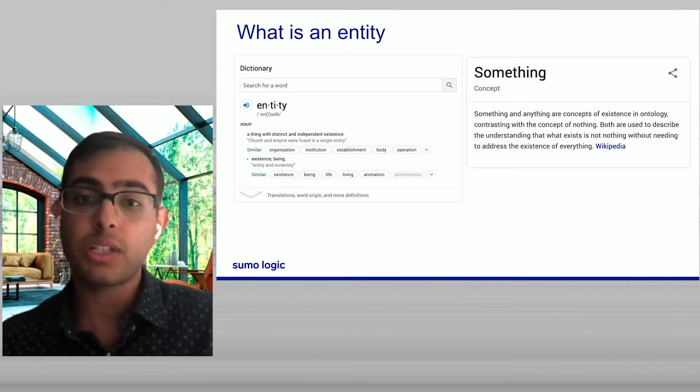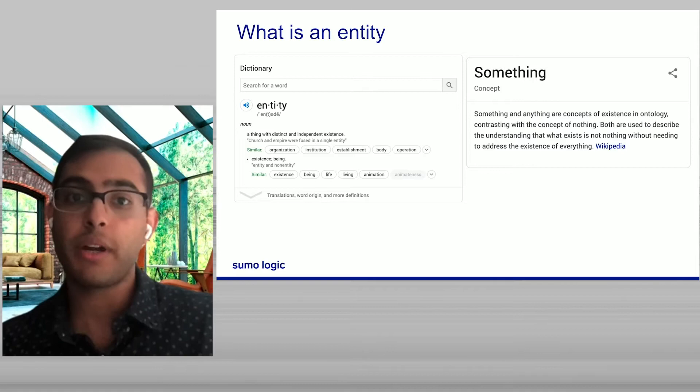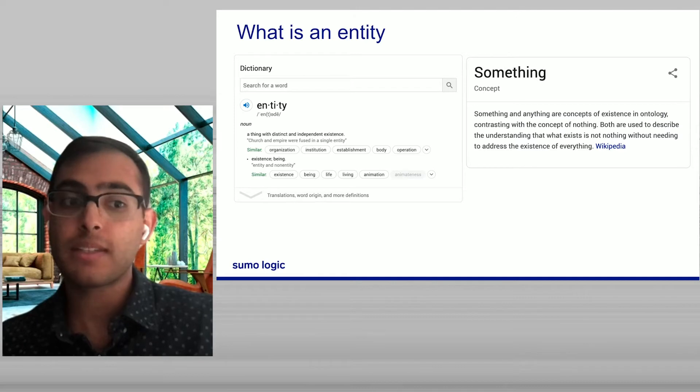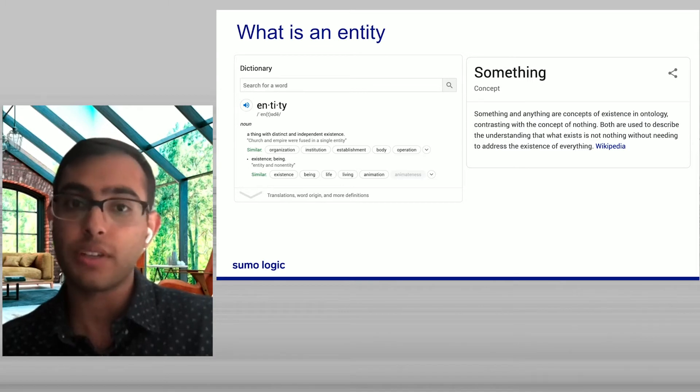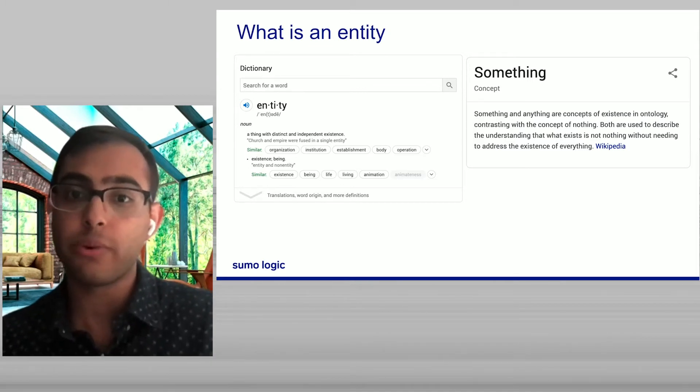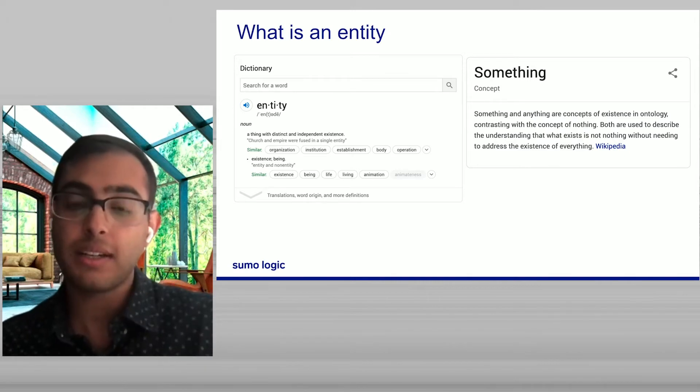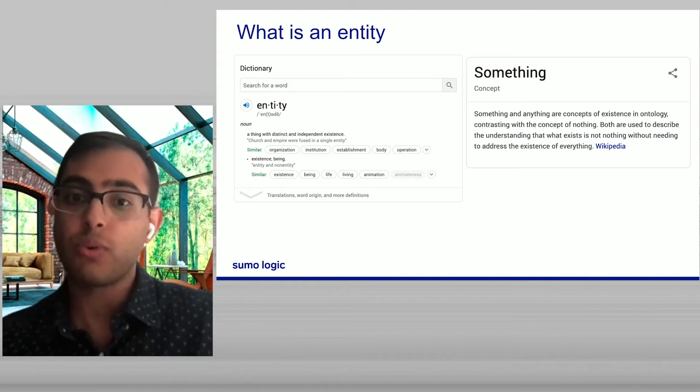So I decided to do the classic thing anyone does when they want to learn about a new topic, and I decided to Google Entity and see what would come up. First and foremost, I got this kind of philosopher's digest of the definition for what an entity is. It's a thing with distinct and independent existence, not really the physical kind of definition I was looking for. So I decided, let's look at the quick hint that Google gives you on the side. And unfortunately, it was no better. It said, basically, an entity is something. Kind of an open-ended definition of what an entity is.